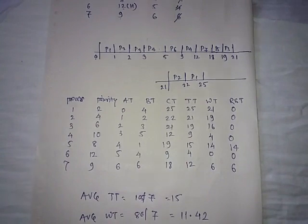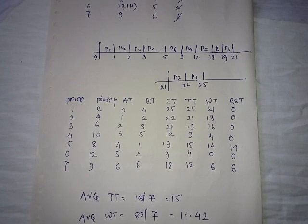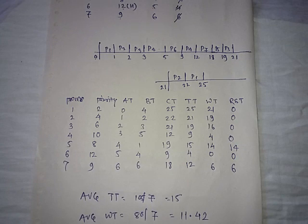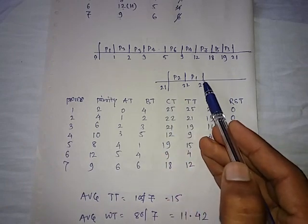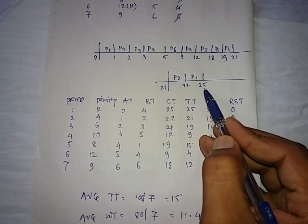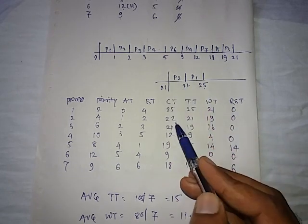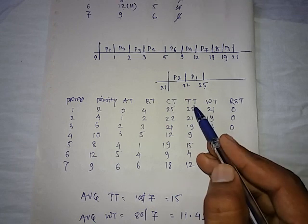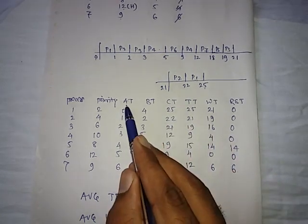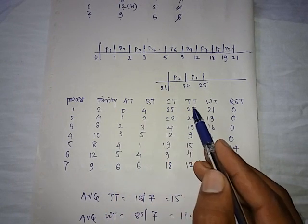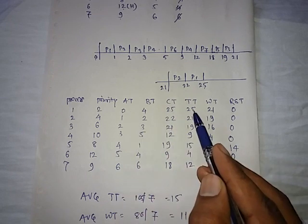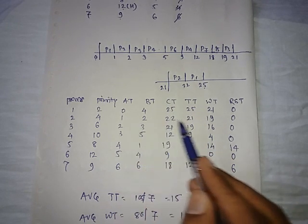Now we have drawn the table to calculate the metrics. Completion time is read from the Gantt chart — for P1 it is 25, for P2 it is 22. Turnaround time is calculated using the formula: turnaround time equals completion time minus arrival time. For P1: 25 minus 0 equals 25. For P2: 22 minus 1 equals 21.